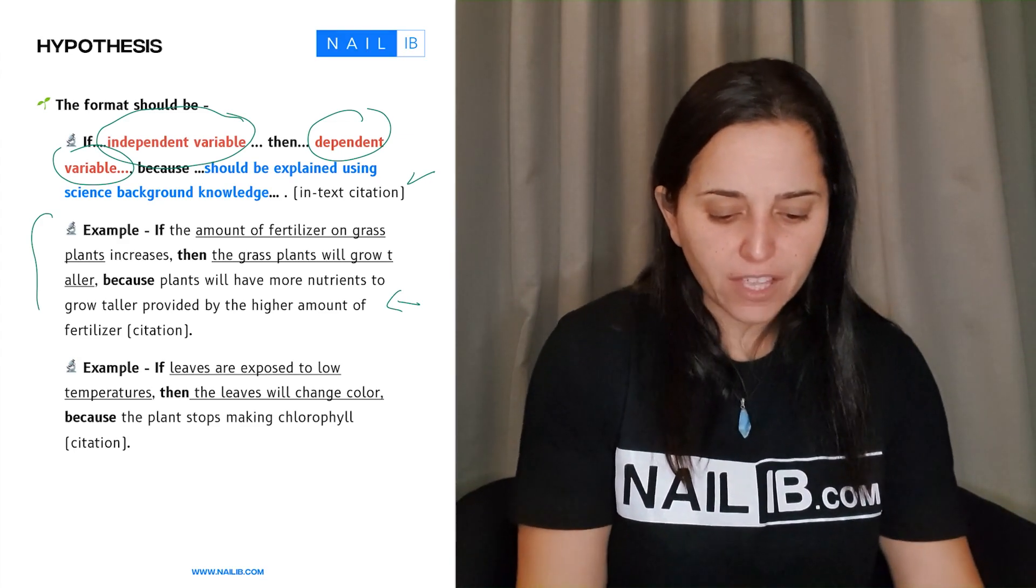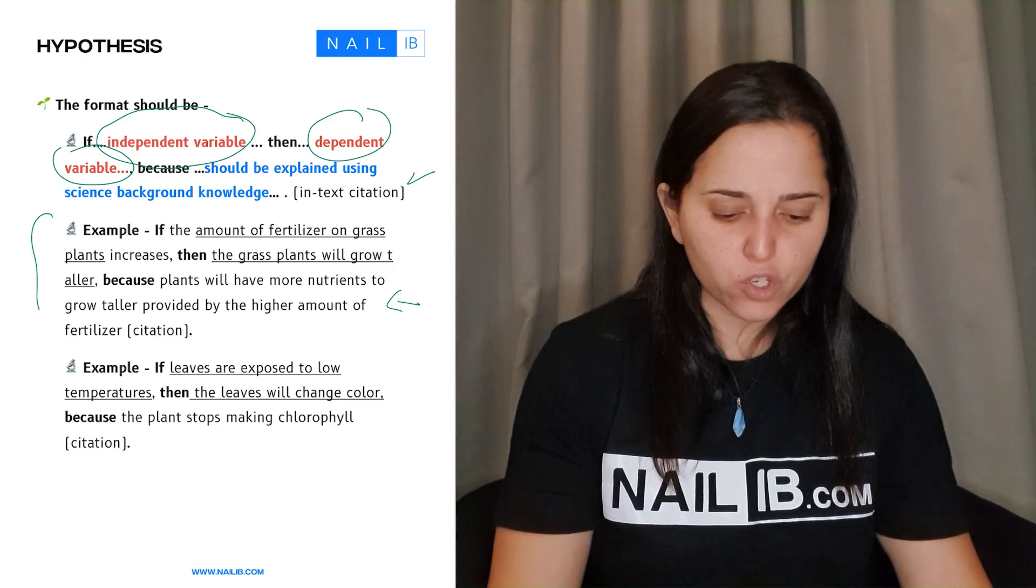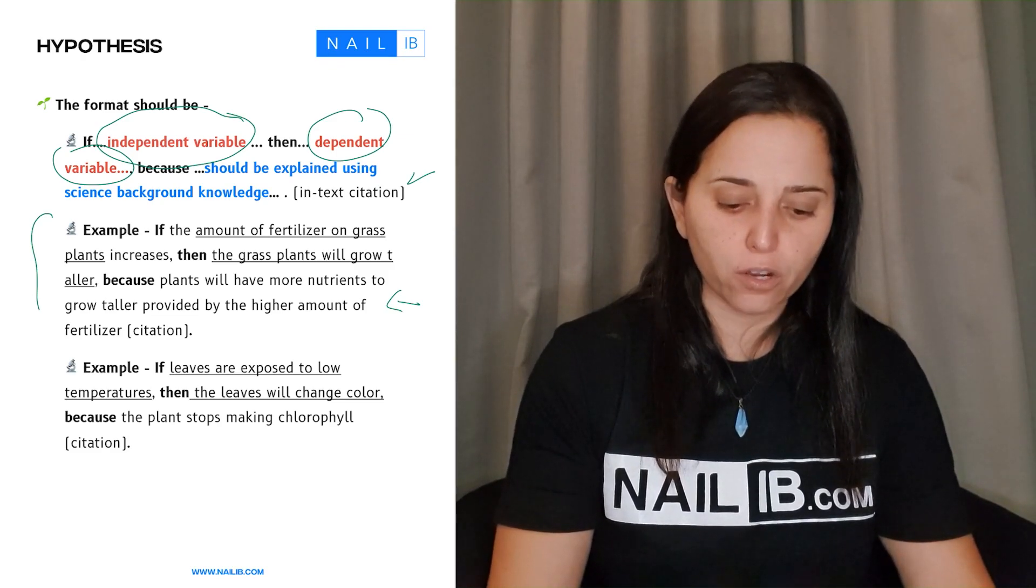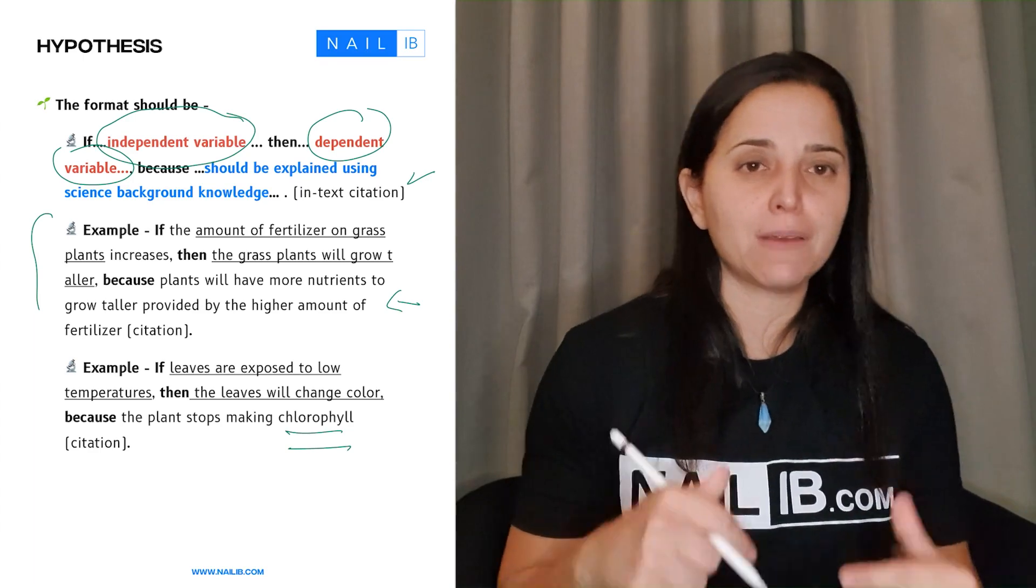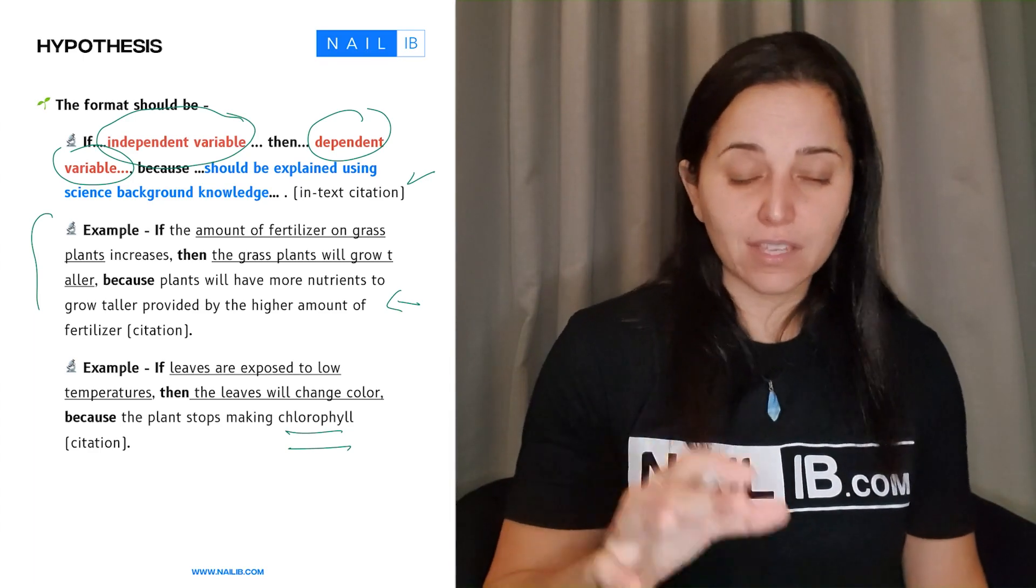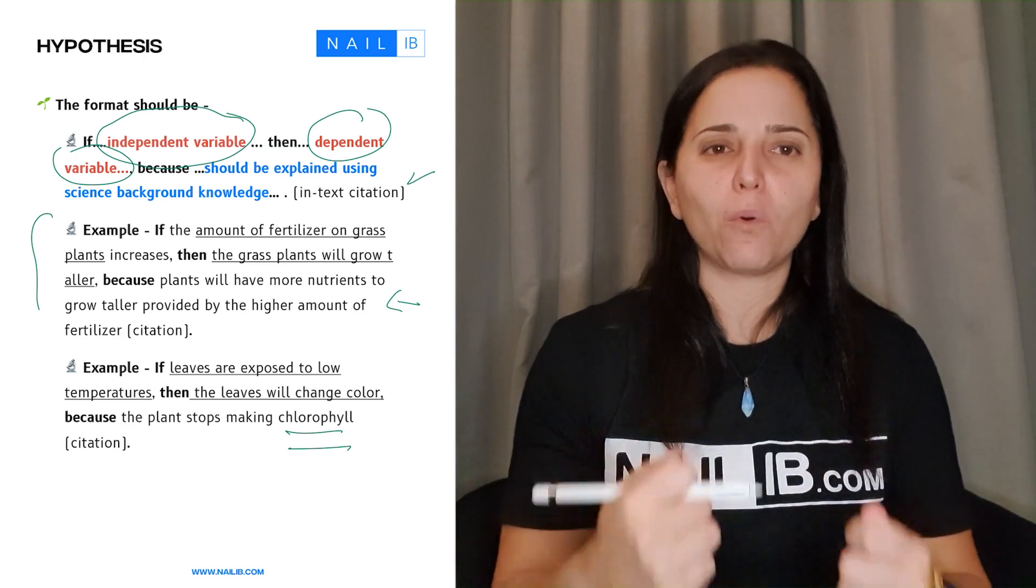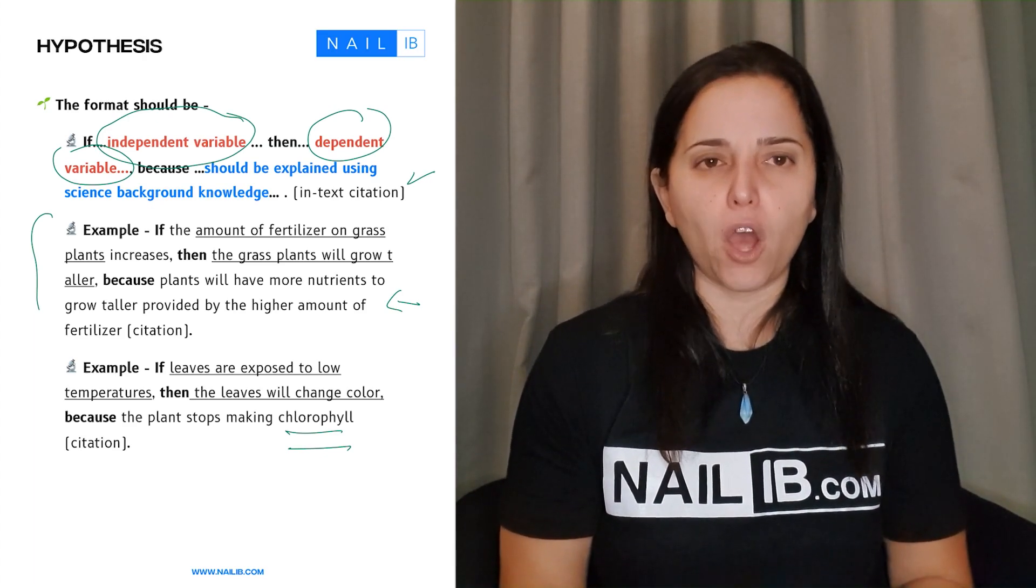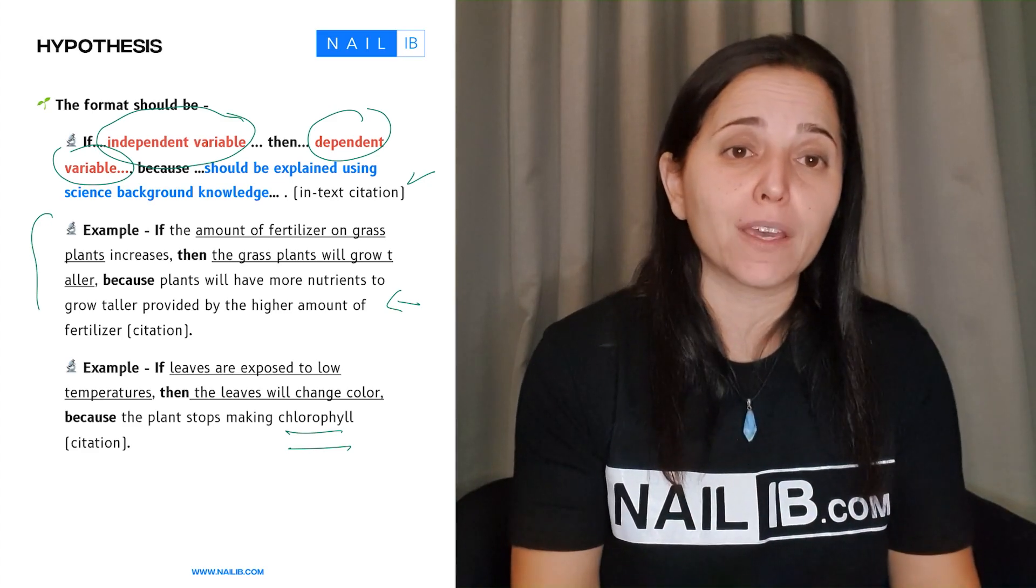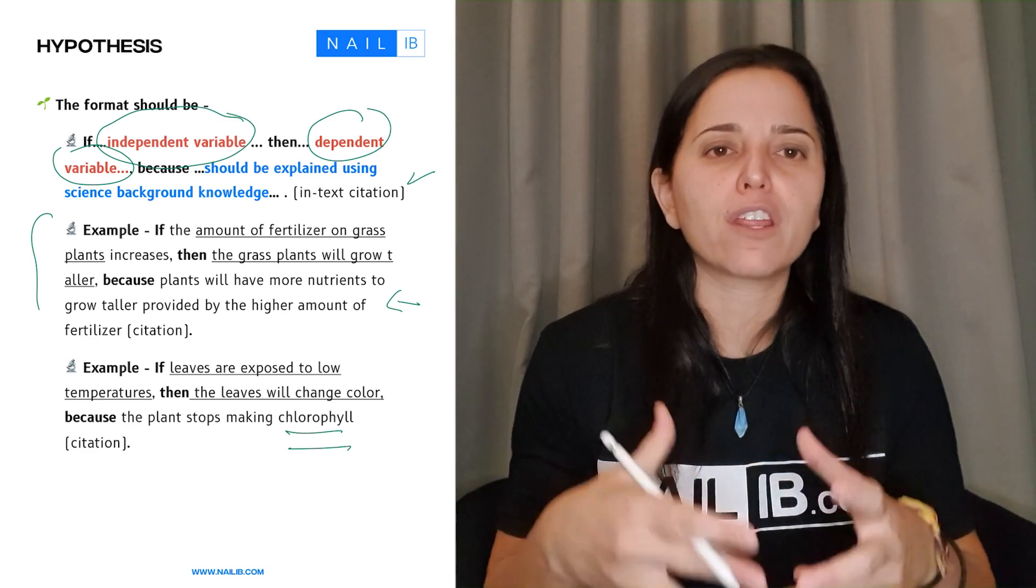Next one says if leaves are exposed to low temperature, the leaves will change color because the plant stops making chlorophyll. See, it's already explaining in more detail the biological side of it. Now, is this enough explanation? Yes, it is, but I would still advise you to go a little bit more, explaining the details of biology, and that usually will be in your topic 3, topic 4, whatever it is, the topic that you're talking about.